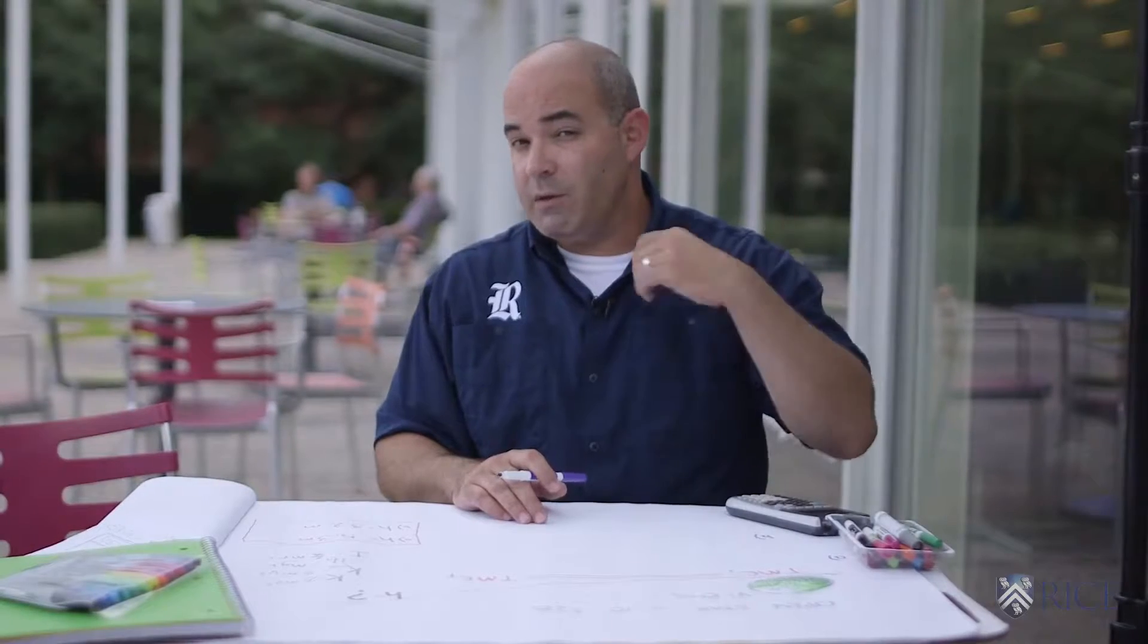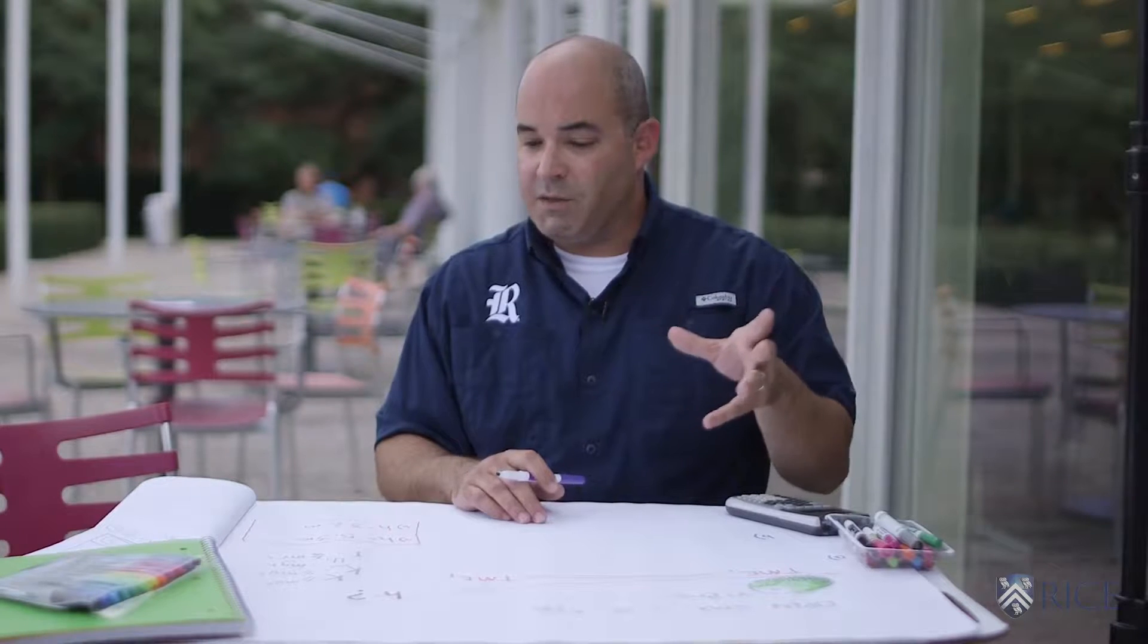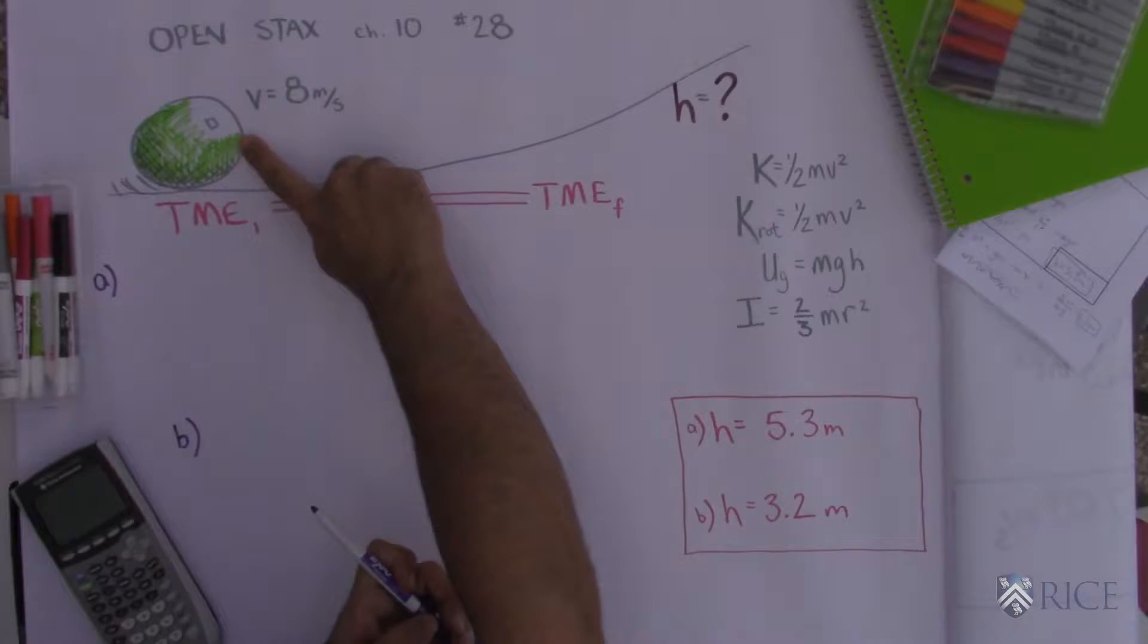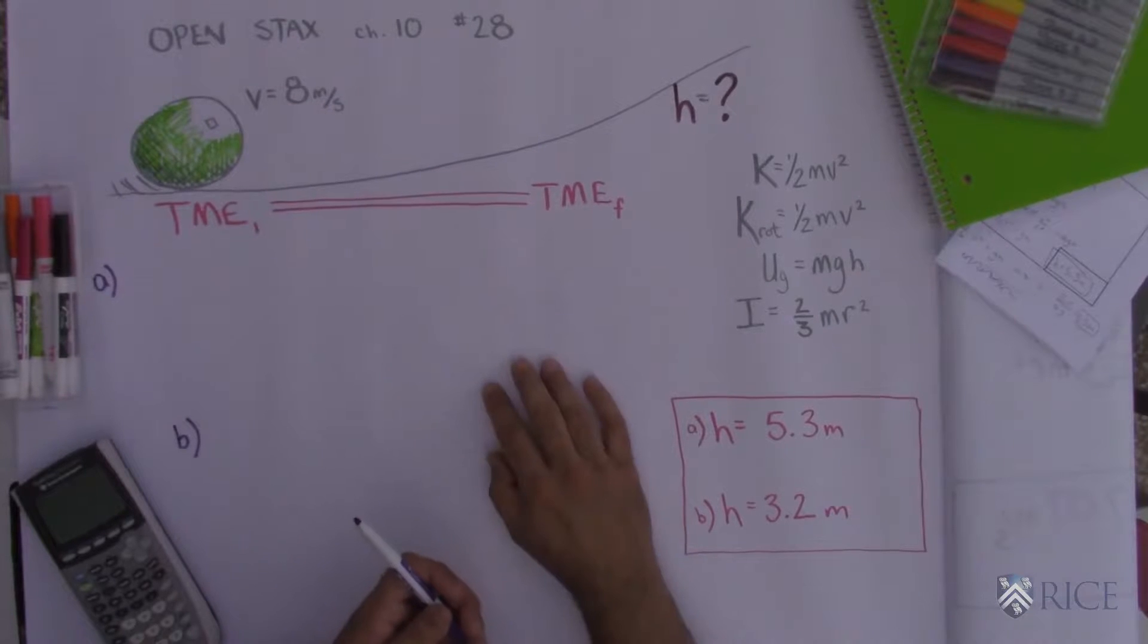Again, we don't know the mass and we don't know the radius, and I'll show you how that cancels out. So I made a list of what's given. There's not much. All we know is that it's a sphere and it has a velocity of 8 meters per second.